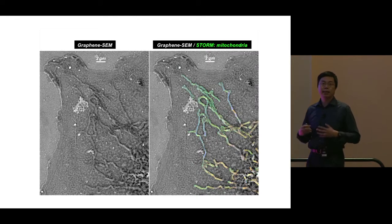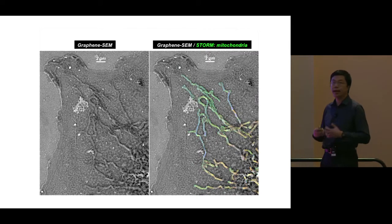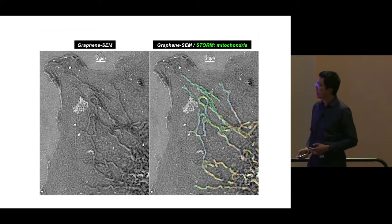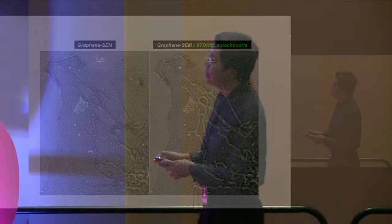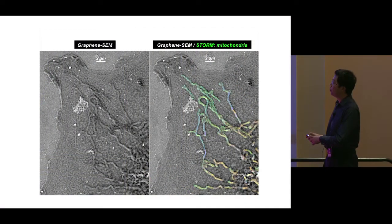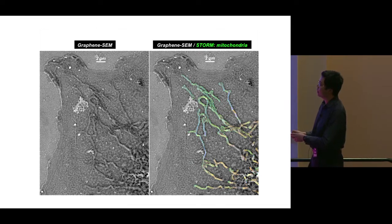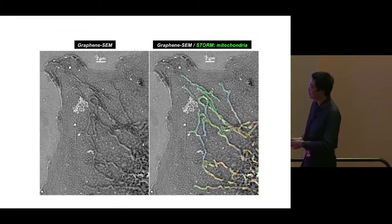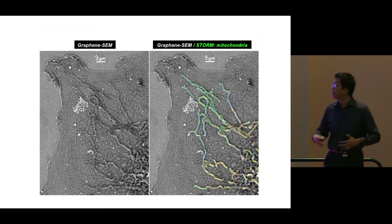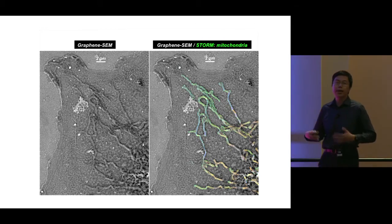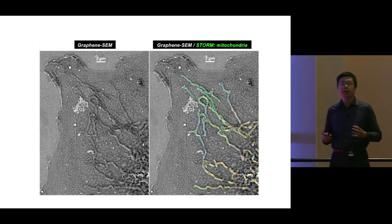Here is another example looking at cellular membranes with electron microscopy under graphene coverage of wet cells. We can easily map that to the super-resolution images — shown here in color for mitochondria. The SEM provides the highest resolution while STORM super-resolution microscopy provides molecular specificity for particular targets like mitochondria. Electron microscopy gives us all the membrane structures in the cell, including finer membranes of the ER and other structures, which can be correlated with super-resolution microscopy.